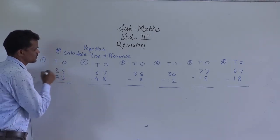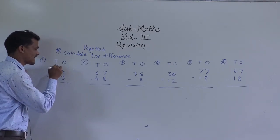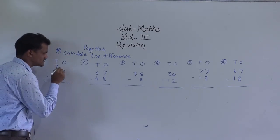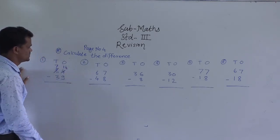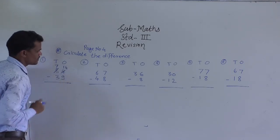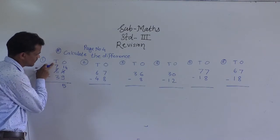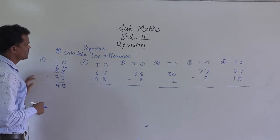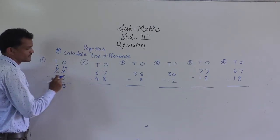So, what to do here — you have to regroup this 8 tens into 7 tens and 10 ones. That 10 ones add into this 4 ones, so you will get 14 ones. Now it is possible to subtract: 14 minus 9 is 5, then 7 minus 3 is 4. So 45 is the difference between 84 and 39.